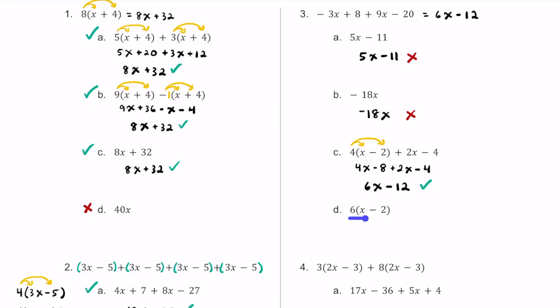For D, we have 6 times the quantity of x minus 2. Using the distributive property: 6 times x is 6x, and 6 times negative 2 is negative 12. So we get 6x minus 12, which matches exactly what we had earlier, so this works as well. Answer choice A doesn't work because the coefficients and constant terms don't match. B looks like it tried to combine unlike terms, with integer rules done wrong too.